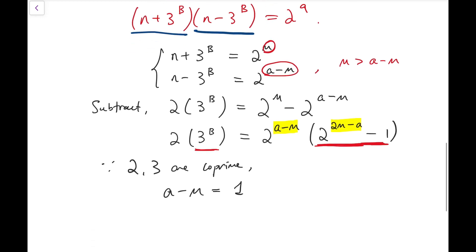So we have a minus m equal to 1 and 3 to the power of B equals 2 to the power 2m minus a minus 1.